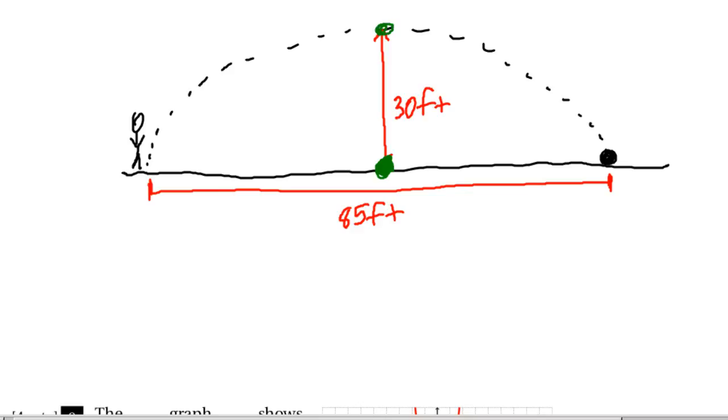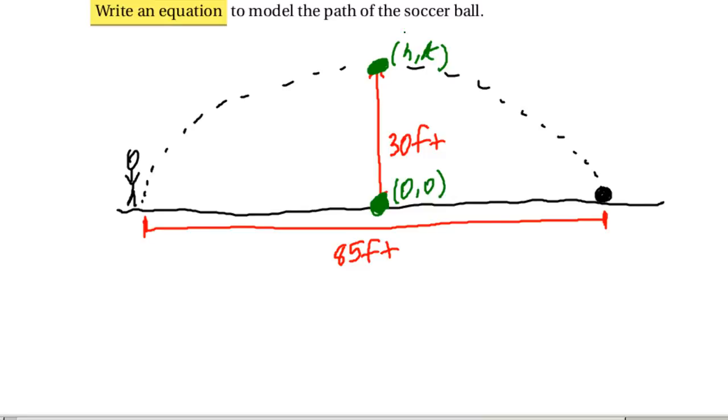So that would mean that this point right here, which is halfway, is the vertex. Now remember your vertex is h and k for a parabola. Because it's directly above this origin that I just put here, that means the h value is going to be zero. So this h value is zero and then k is directly up and that's the full length of this 30. So we now know that h is zero and k is 30.